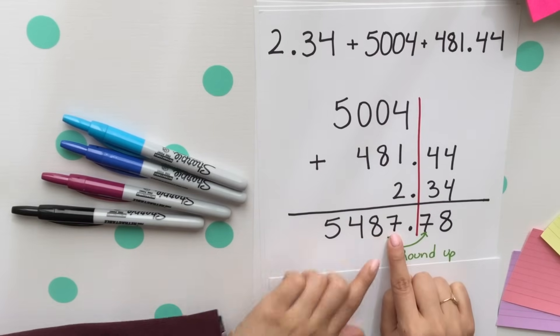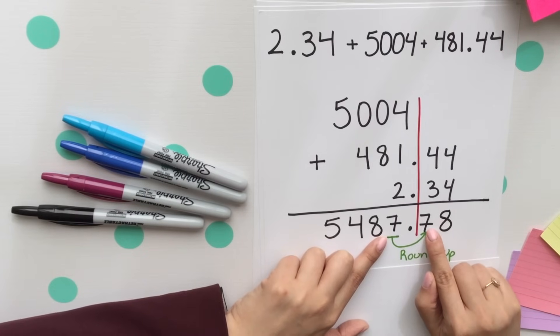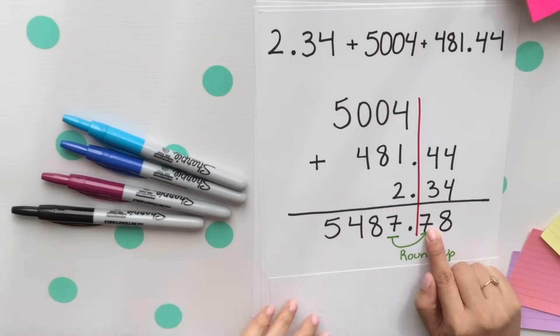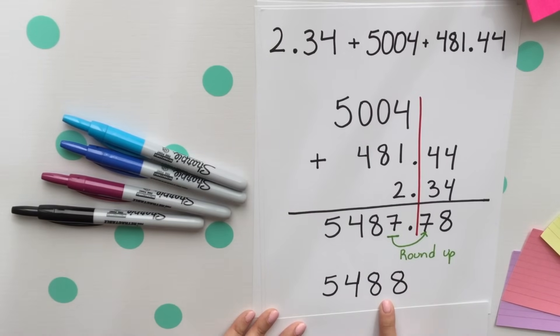Remember when rounding to the ones place, or rounding any number, you look at the one right next to it, to the right, and if it is five or more, you round up. Your final answer will be rounded up to 5,488. We have four sig figs.